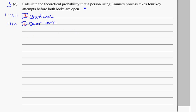So, four attempts to work this out exactly, that means that she could use the wrong key, the wrong key, get the deadlock key right, and then get the door lock key right. So, what's the probability of doing the wrong key, the wrong key, getting the deadlock right, and then getting the door lock right.